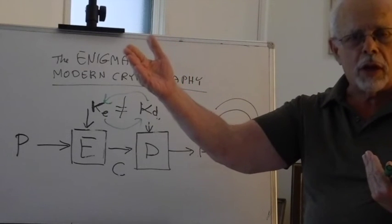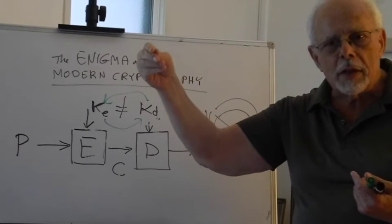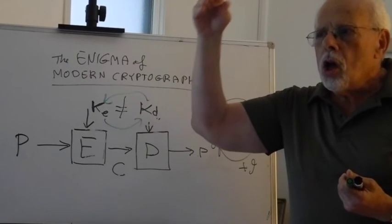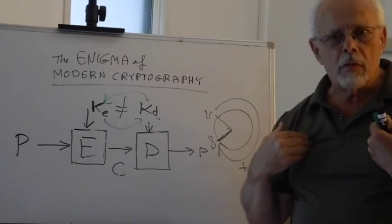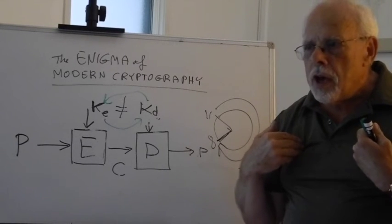What if the adversary has a level of smarts, a level of mathematical insight higher than ours?